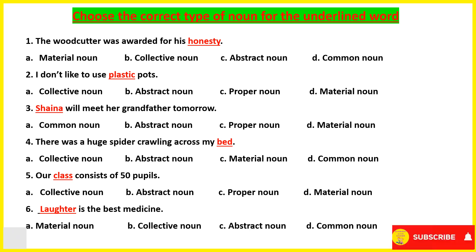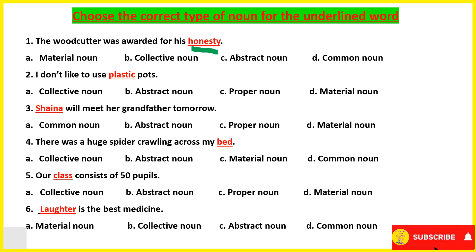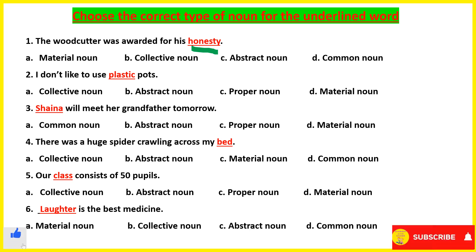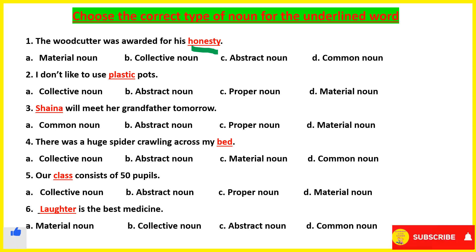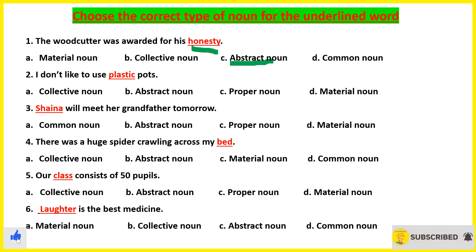Starting with the first question: 'The woodcutter was awarded for his honesty.' Here, honesty is a word that is a quality. Whenever we speak about any quality or any feeling, at that time we talk about abstract noun. So honesty is an abstract noun here.